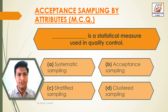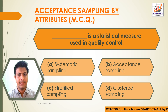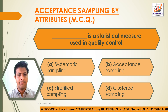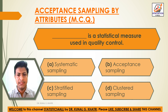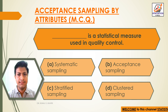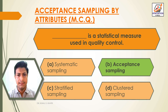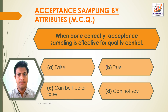Question 1: Dash is a statistical measure used in quality control. Option A: Systematic sampling. Option B: Acceptance sampling. Option C: Certified sampling. Option D: Cluster sampling. The answer is Option B — Acceptance sampling is a statistical measure used in quality control.